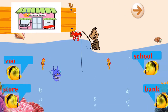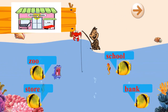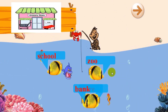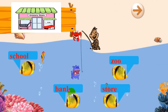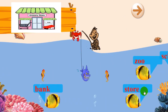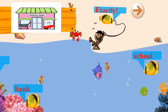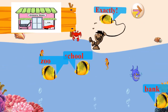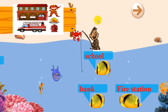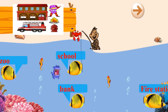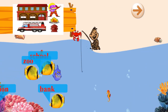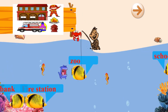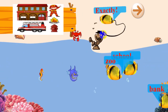Let's take a look at this picture. Can you guess which place it is? School, zoo, bank, or store? Let's choose store. That's right — that is the correct answer. This place is store. I see a firefighter here, so it's easy to know that this place is fire station. That's right.